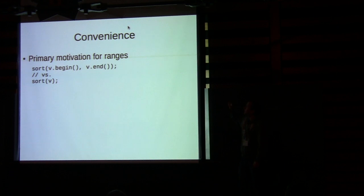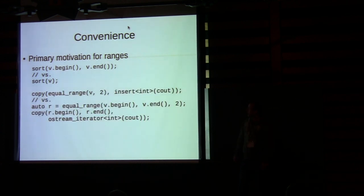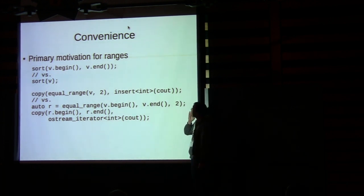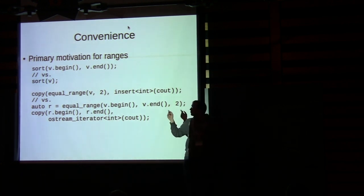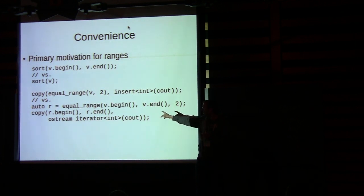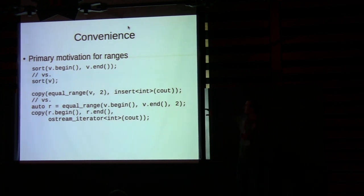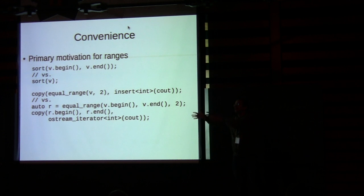Convenience is the reason we want ranges — we want the lower line, not the upper line. With ranges, we want to write sort v instead of sort v.begin, v.end. Without ranges in the current standard library, you call equal_range, which returns a pair, so you have to unpack it. Even if it returned something with begin and end member functions, it's still two lines and it doesn't compose — I cannot take the result of equal_range and pass it directly to copy.